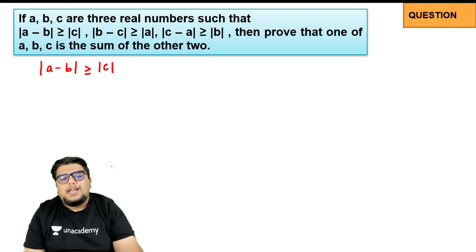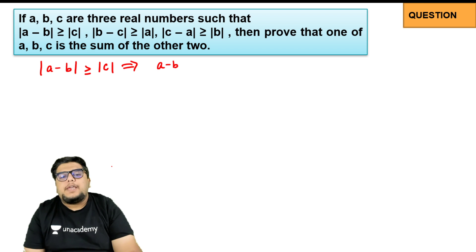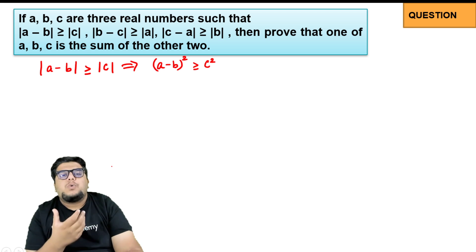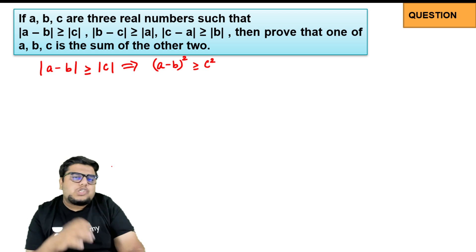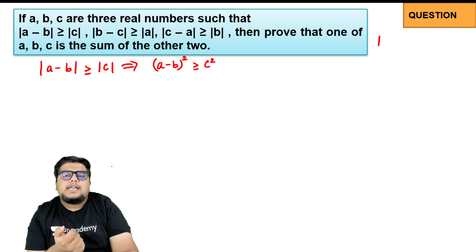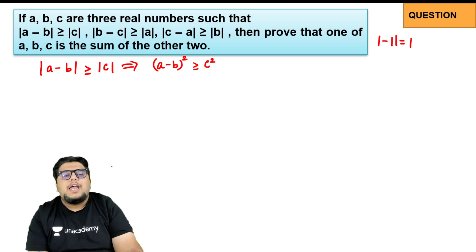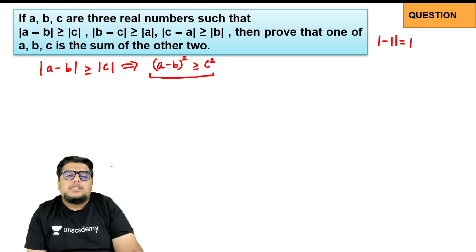To remove the modulus, I will square both sides. I get (a minus b) whole square greater than or equal to c squared. There is no need for the modulus sign because both sides are already positive when squared — a modulus makes everything positive, but squaring does that too, so we can remove it.